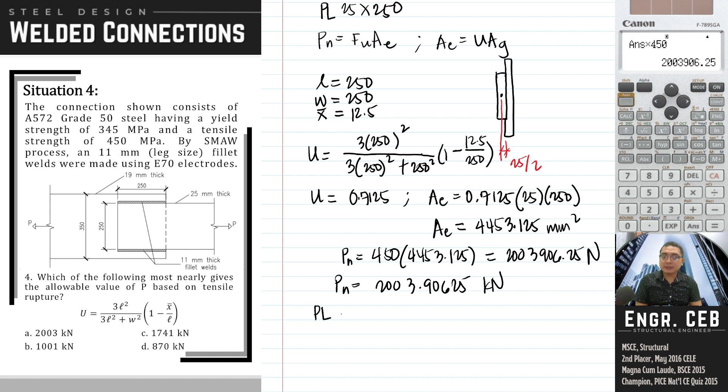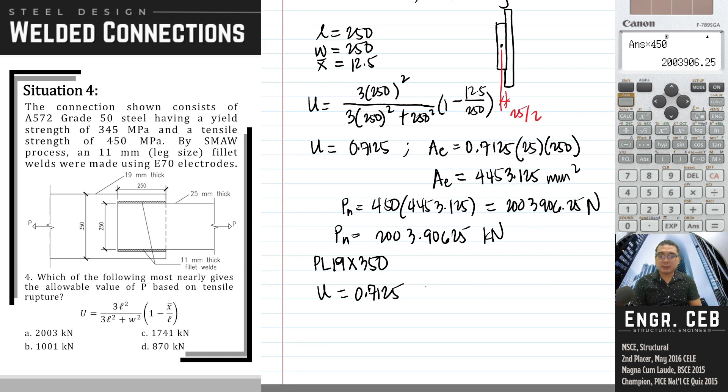Next is for PL 19 by 350. How do we calculate the shear lag factor for PL 19 by 350? Let's compute AE. L will be the same, the length of the welds, and W is the same at 250, the distance between the welds.